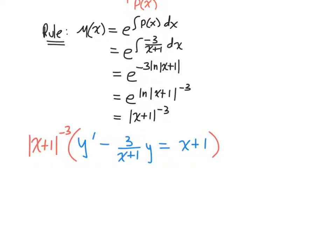So it doesn't really change anything for the first term. x plus one, x plus one to the negative third, y prime, minus three x plus one times x plus one. That's a three over x plus one times all of this, but this really goes on the bottom. So that's actually going to give you a fourth power. So that's good news.